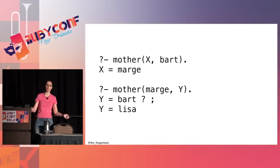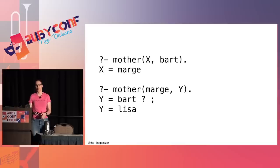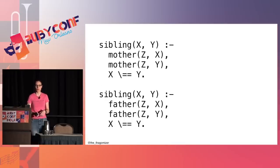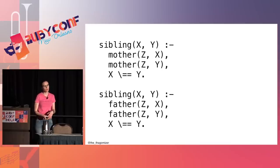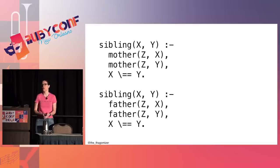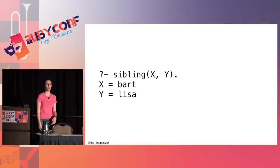The real strength of Prolog is that I can run programs backwards and forwards and put variables wherever I want — it's crazy the first time you do this but also super powerful. I can build more complex rules, like 'sibling': X and Y are siblings if there exists some Z who is the mother of X and the mother of Y, and X and Y are not the same person. Similarly with fathers. Prolog figures out what values to put into each variable to make this true. Query: 'Who are siblings?' — Bart and Lisa.